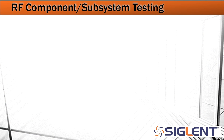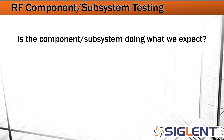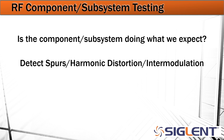The next application is RF component and subsystem testing. Is the component or subsystem doing what we expect? If we expect an amplifier to output 10 dBm, is it actually going to do that with the given input, and over the correct frequency range? Is our filter working correctly? We can detect spurs, harmonic distortion, and intermodulation, because the spectrum analyzer lets us visually see exactly what's happening with respect to frequency in that component or subsystem.